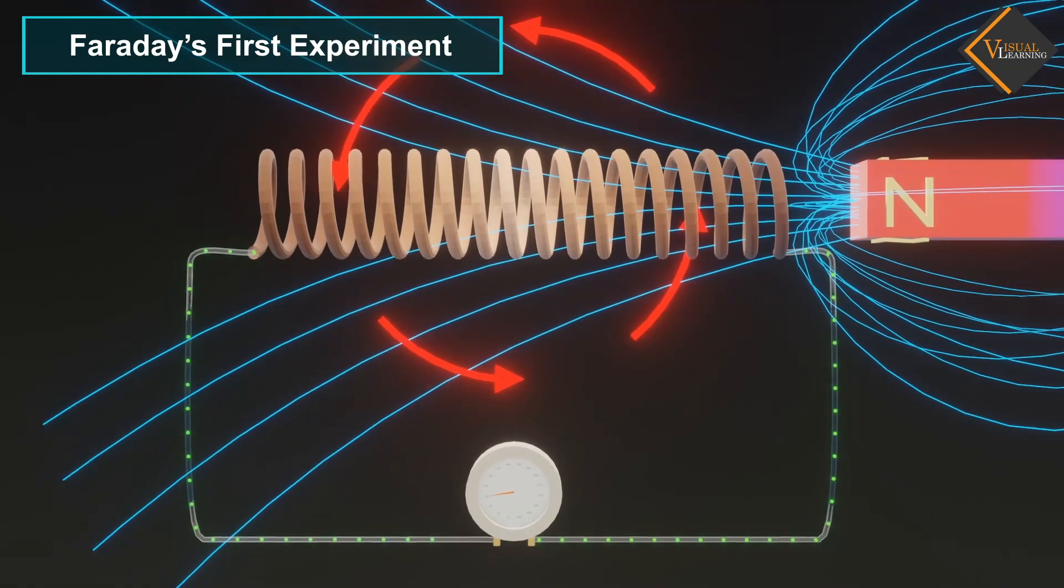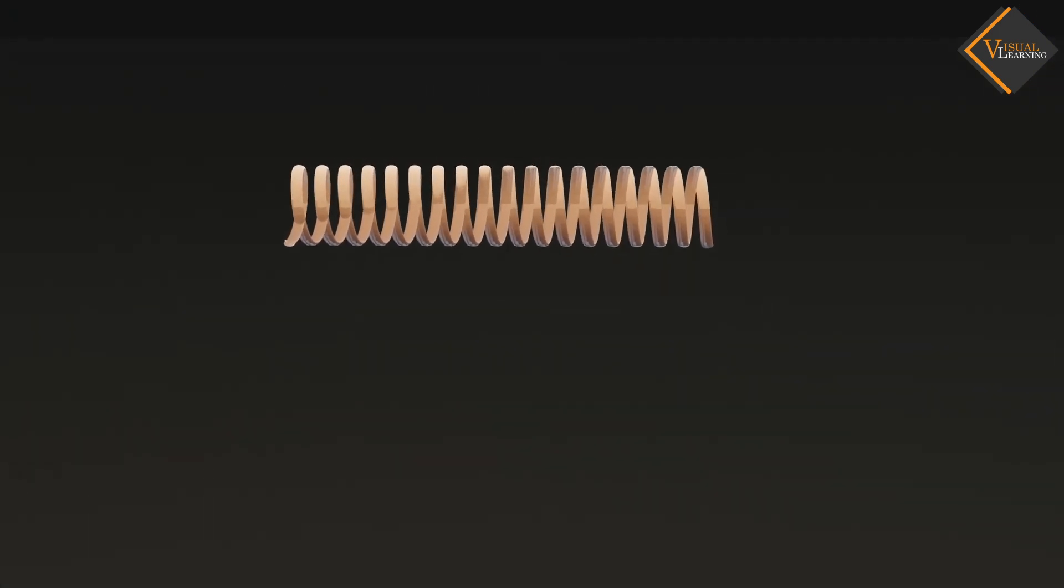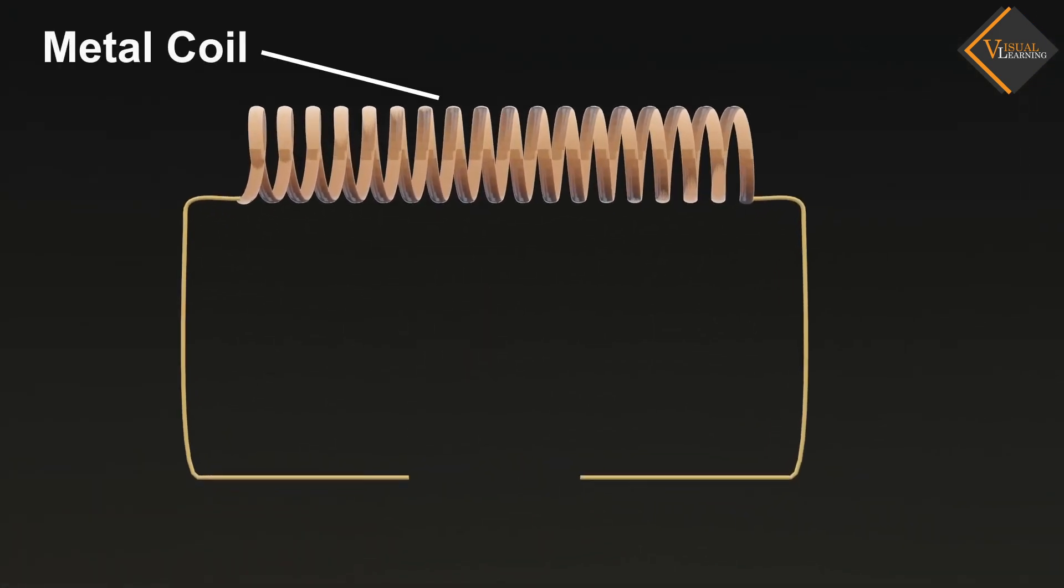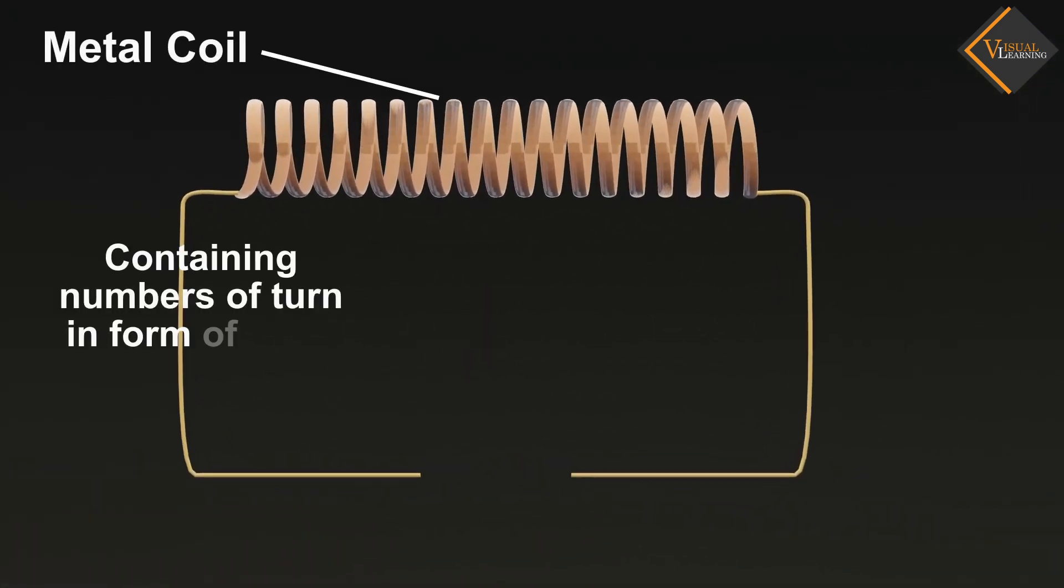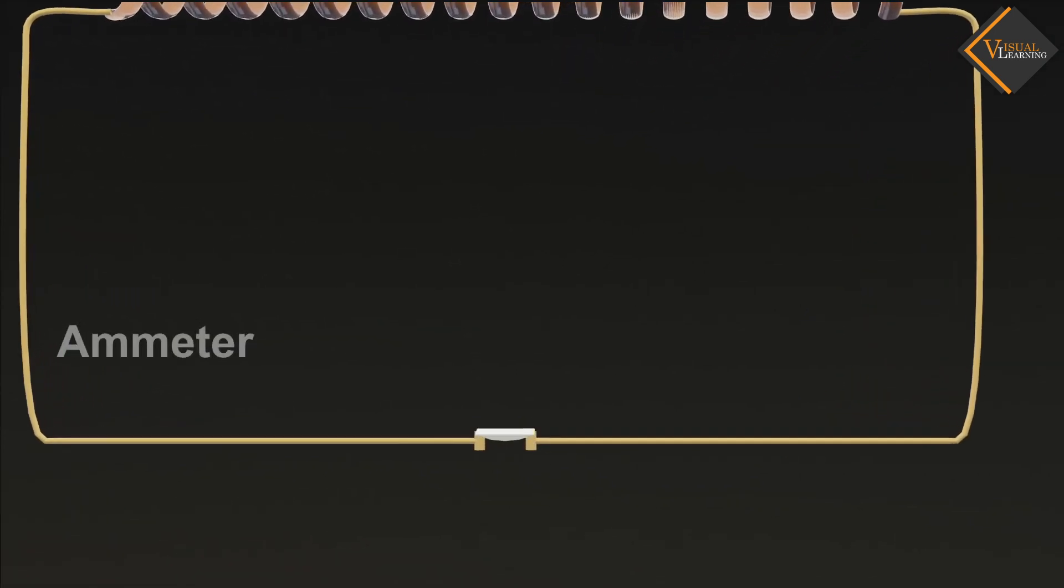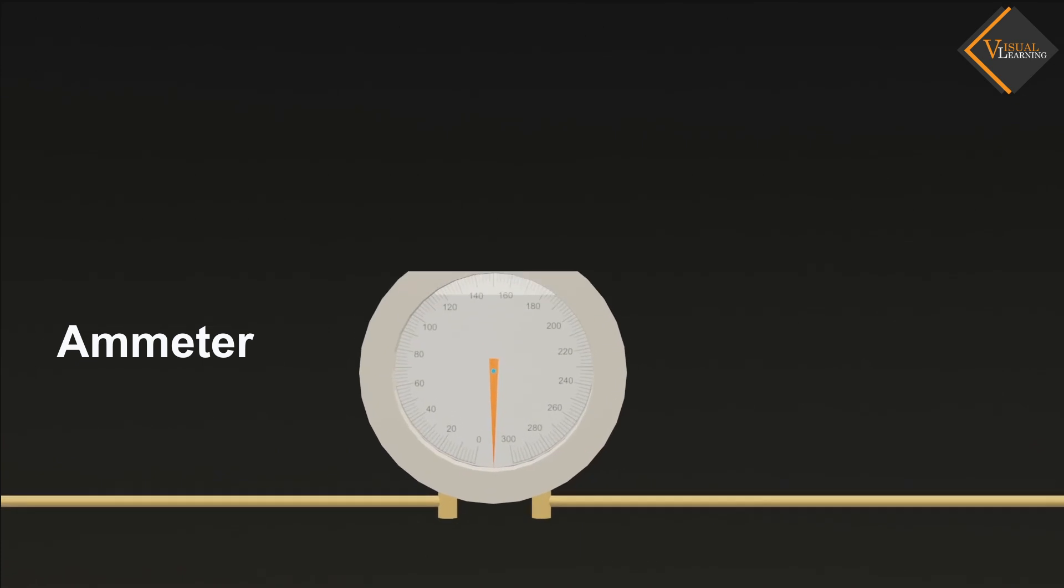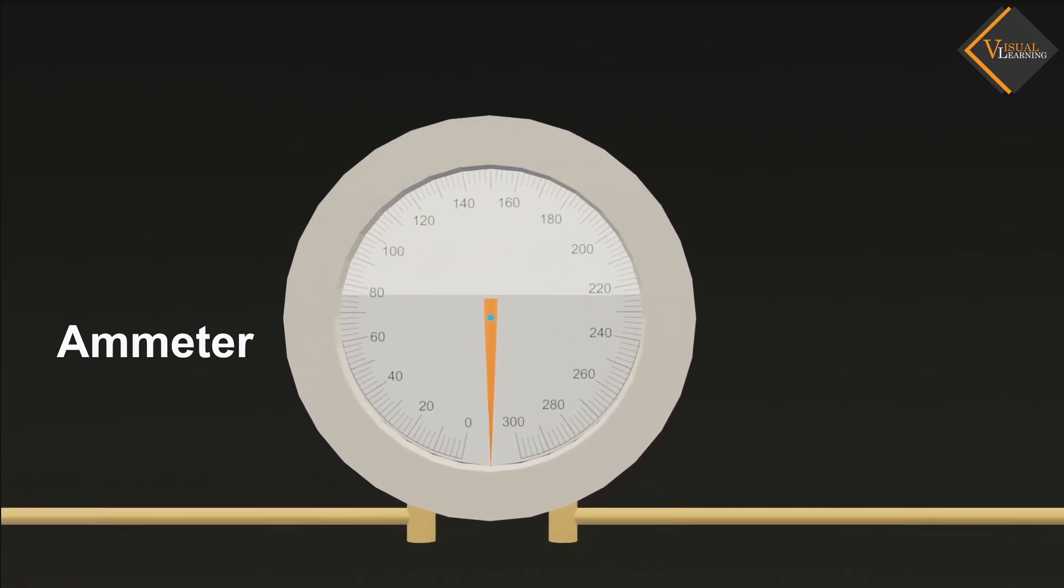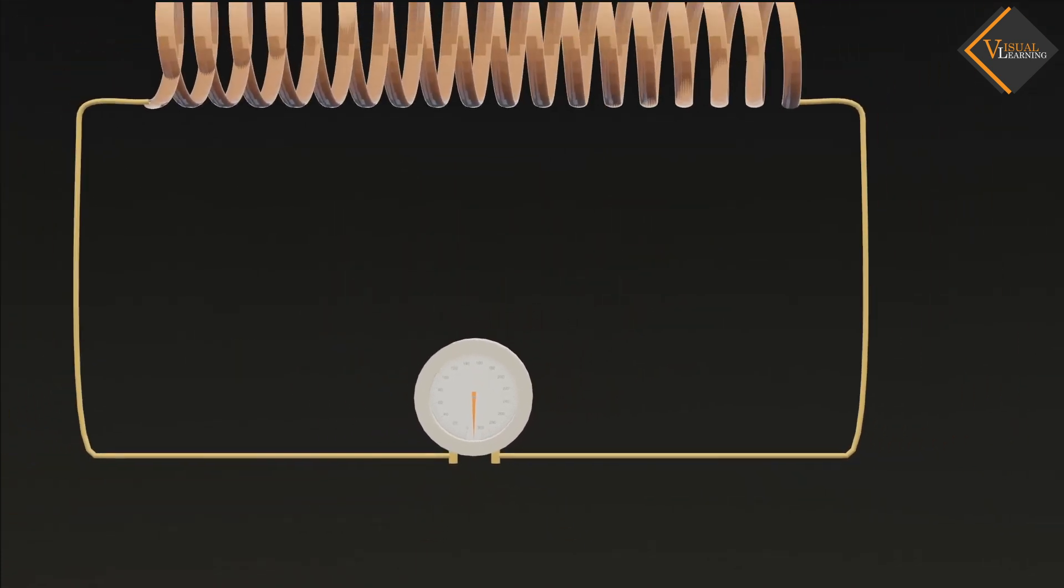Let us understand in detail. In this experiment, there is a metal coil with a number of turns in a circular loop. The coil is connected to an ammeter using copper wire. An ammeter is a device used to measure current.